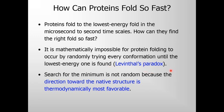This means that mathematically, protein folding cannot happen randomly. The search for the minimum is not random because the direction towards the native structure is thermodynamically most favorable. Protein folding is not random because the native structure it is heading towards is the most energetically favorable structure, and folding pathways that lead to this low energy structure come into play automatically.